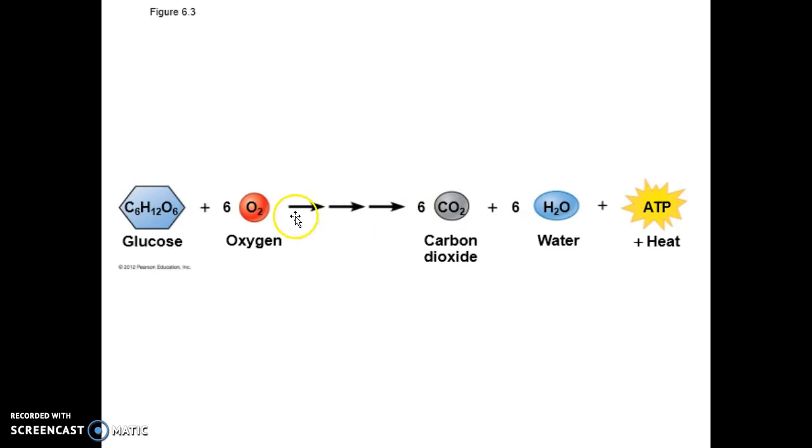You should know the exact role of each of these intermediates, I should say reactants, in cell respiration. We're going to talk about how glucose is broken down using oxygen, and how carbon dioxide is produced, water is produced, and ATP is produced. So be able to account for each of these products in cell respiration.